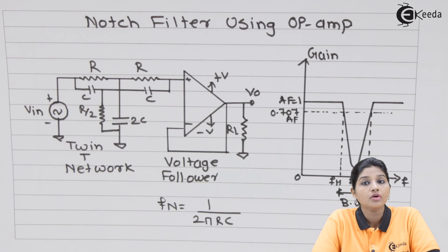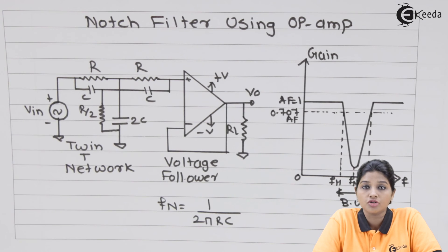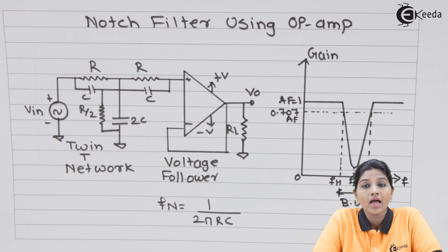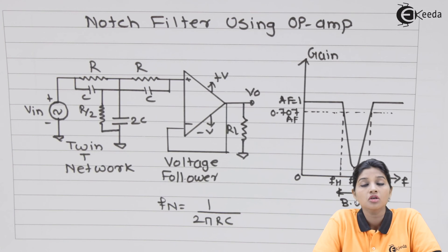I hope you understand the topic of notch filter or narrow band reject filter, which has one stop band and two pass bands. The stop band has a very high value of Q, which rejects a particular frequency only. Thank you very much for watching this video.